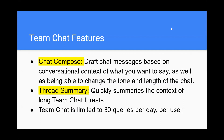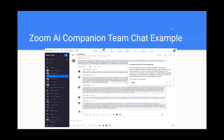Thread Summary quickly summarizes the context of long team chat threads. Team Chats usage is limited to 30 queries per day per user. This is an example of how Zoom AI Companion Team Chat looks like.